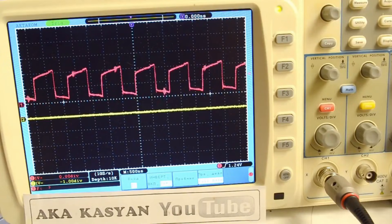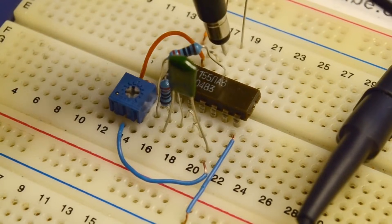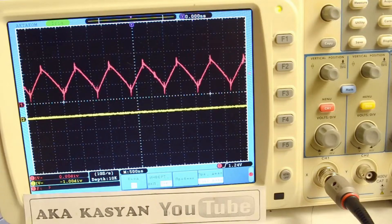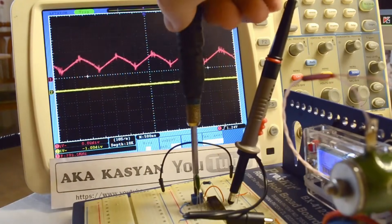We get the following signal at output 1, a somewhat distorted square wave. And this is the signal at output 2 that interests us, where we can already see a triangular signal. The shape of the signal can be adjusted using a trimmer resistor.